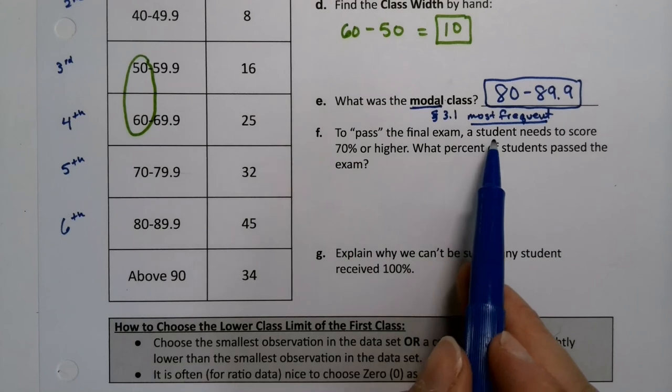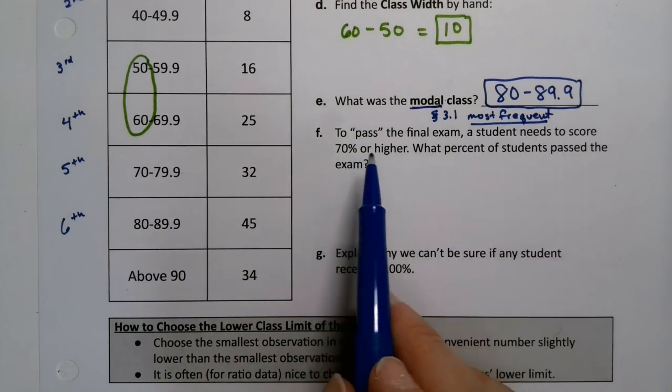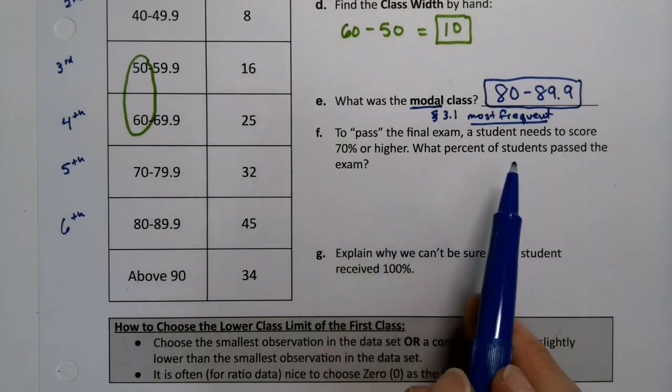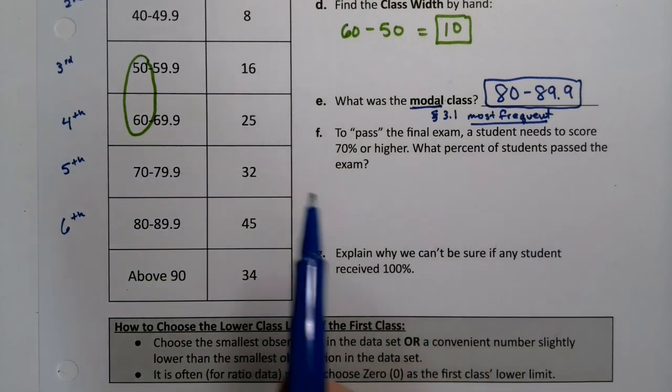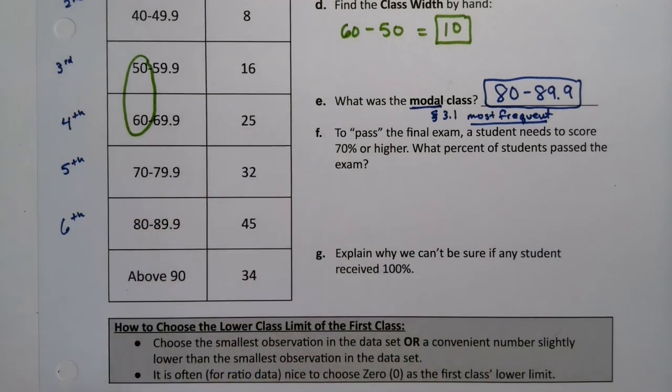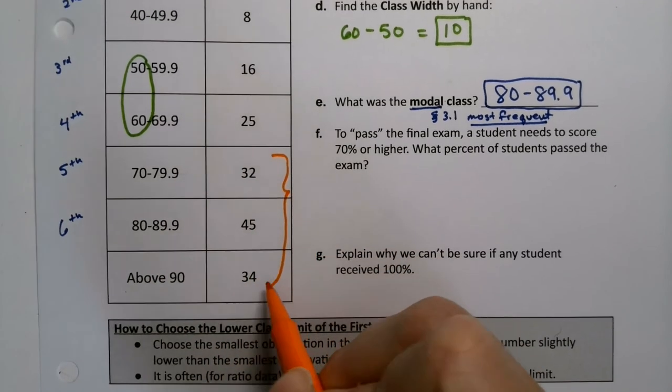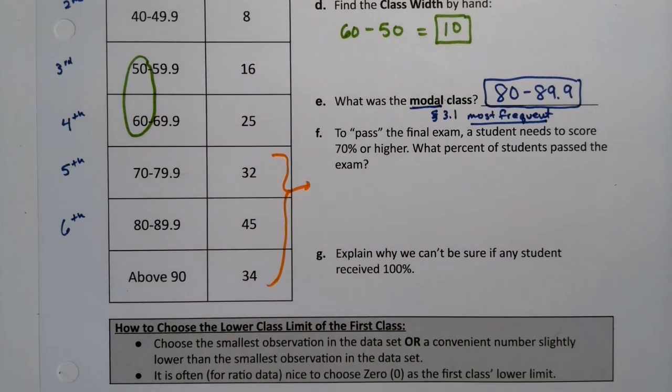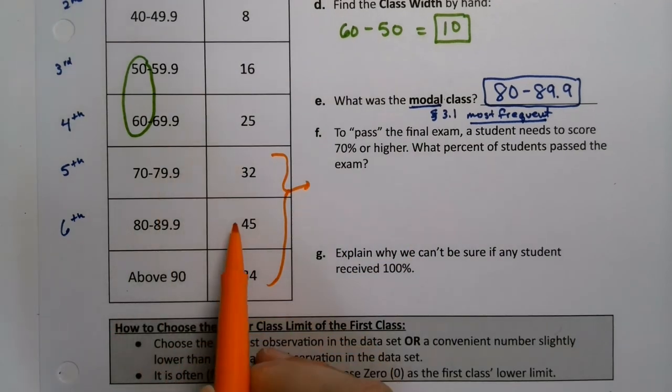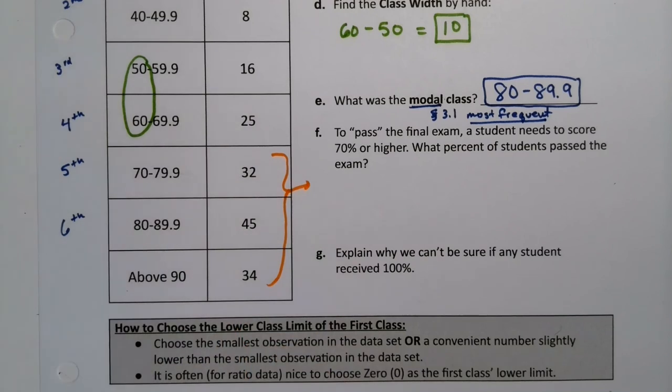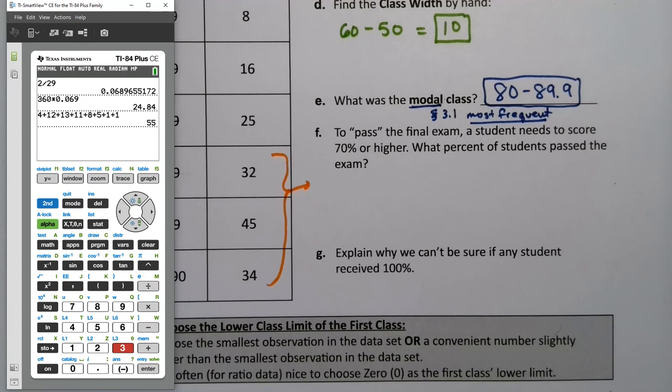To pass the final exam, a student needs to score 70% or higher. What percent of students passed this exam? So 70% or higher is these three groups right here. These three are all the people that scored 70% or higher. So we need to add these three up. I'm going to need a calculator for that. So 32 plus 45 plus 34 equals 111.